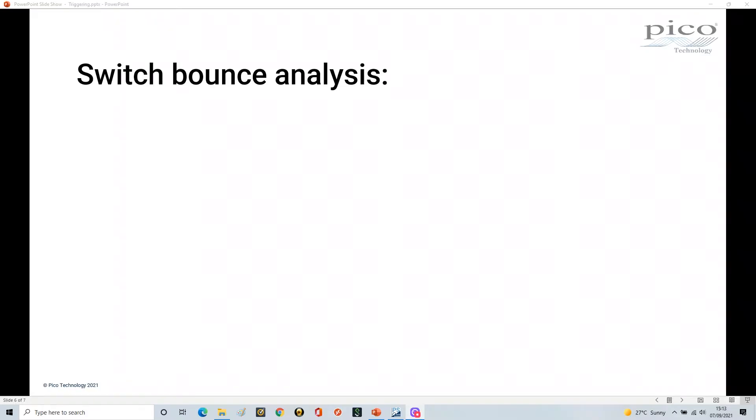Hello again, and in this last section of this video about triggering we're going to look at switch bounces very quickly. We have the following circuit: a five volt supply going through a switch to a pull-down resistor, and we've got our scope connected across the resistor effectively.